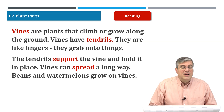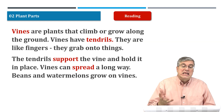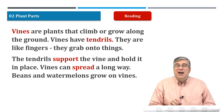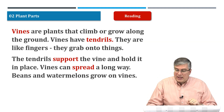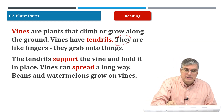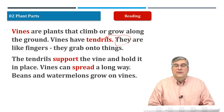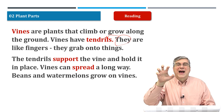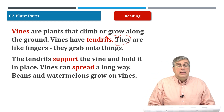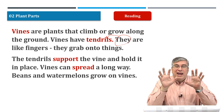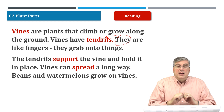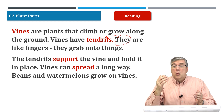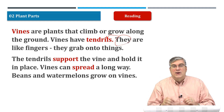Vines are plants that climb or grow along the ground. Vines have tendrils — they are like fingers. They grab onto things. The tendrils support the vine and hold it in place. Vines can spread a long way. Beans and watermelons grow on vines.